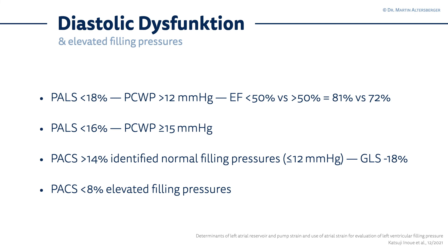The PACS — peak atrial contraction strain — was very good at identifying normal filling pressure. A PACS above 14% identifies normal filling pressure, meaning pulmonary capillary wedge pressure below or equal to 12 mmHg, quite accurately in a normally functioning left ventricle. In a global longitudinal strain above minus 18%, a PACS below 8% was a good marker to denote elevated filling pressure — so if peak atrial contraction strain is low, the filling pressures are elevated as well.